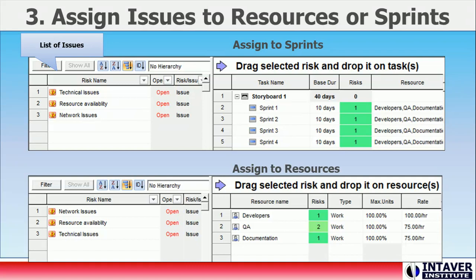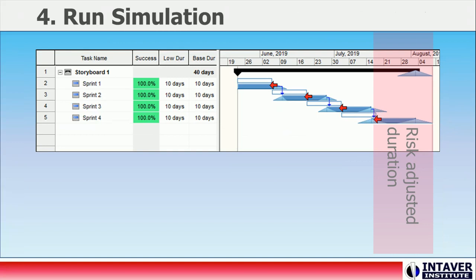Issues can then be assigned to either specific resources or to the sprints. In the first example, both the QA and documentation resources are shared with other projects, and availability to the project is an issue. In the second example, the team anticipates there will be significant technical issues to resolve that may delay the delivery of specific requirements. During project execution, issues can be added or closed as each sprint progresses. Once issues have been assigned, a quick calculation is run to show how the issues might affect the planned work in each sprint. The results can be used to modify the development plan.